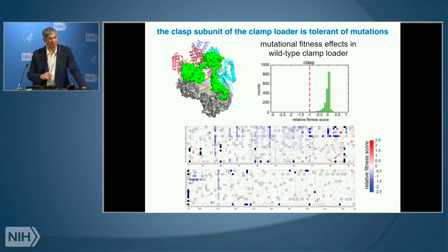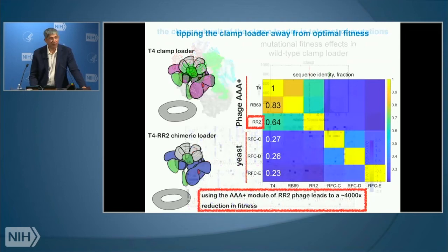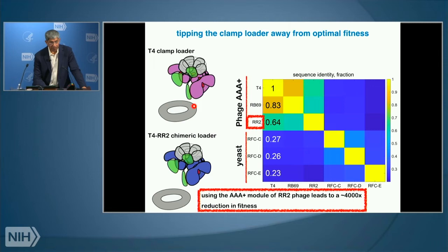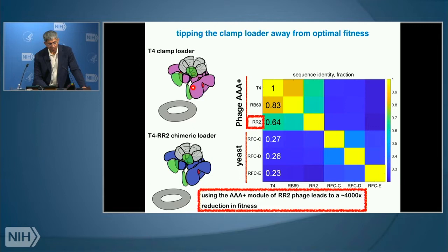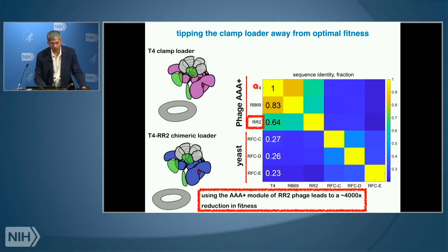It's therefore a disappointment and a shock to look at the saturation mutagenesis results as a heat map and see that the CLASP is not mutationally sensitive. The histogram shows the distribution of fitness effects for every single-point mutation — basically most mutations don't do anything. This goes counter to the idea that the green CLASP subunit is so structurally central and important. So we wondered what would happen if we tipped the clamp loader off balance. What Subu did was to make a chimeric clamp loader, swapping in AAA-plus modules from other clamp loaders — some eukaryotic, some bacteriophage — into the T4 system.